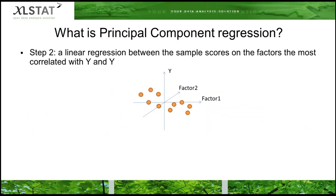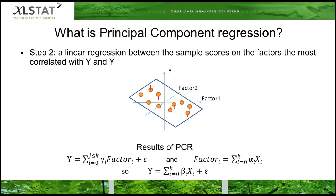The second step of principal component regression is to do a linear regression between the sample scores on the most correlated factors with y and y. In our example, which uses two factors, we find a plane of regression. As can be seen in the equations, the results of the principal component regression is a linear model using the factors.